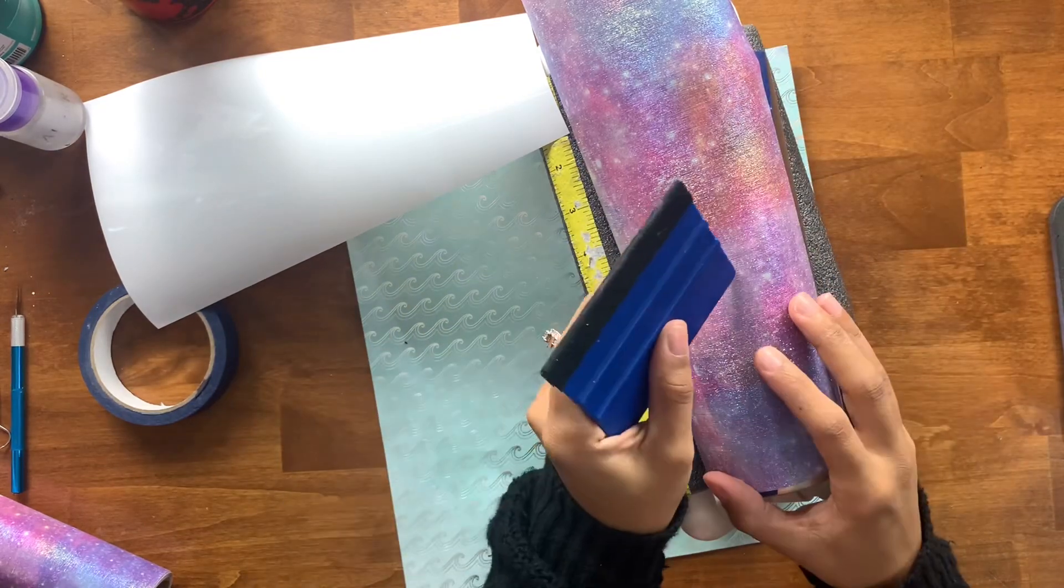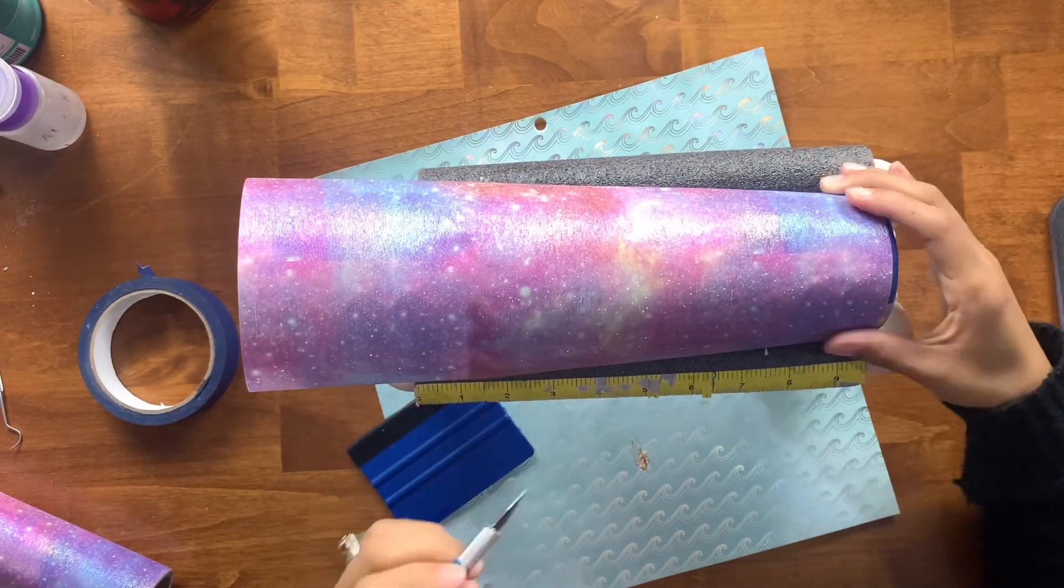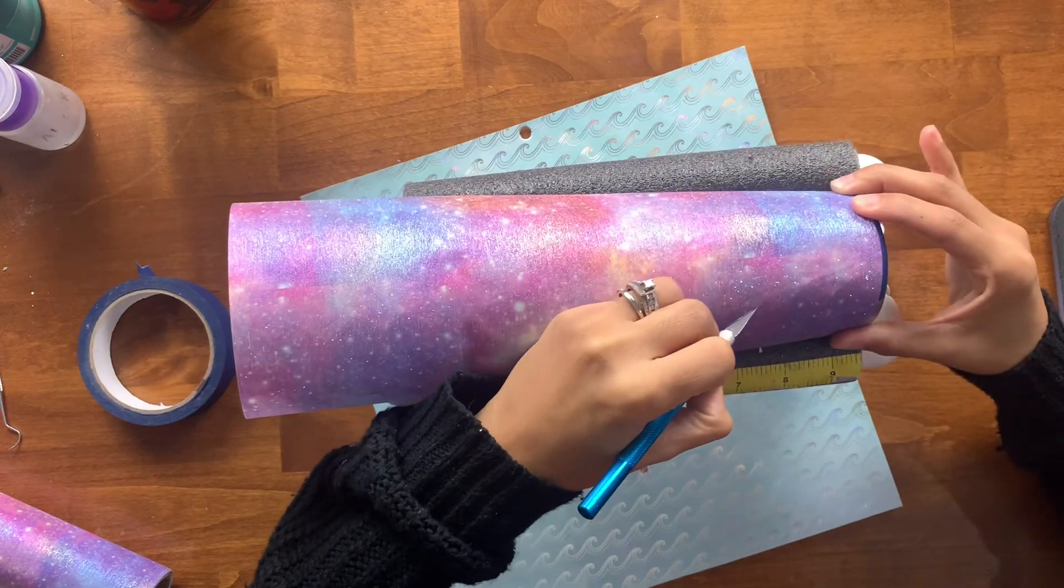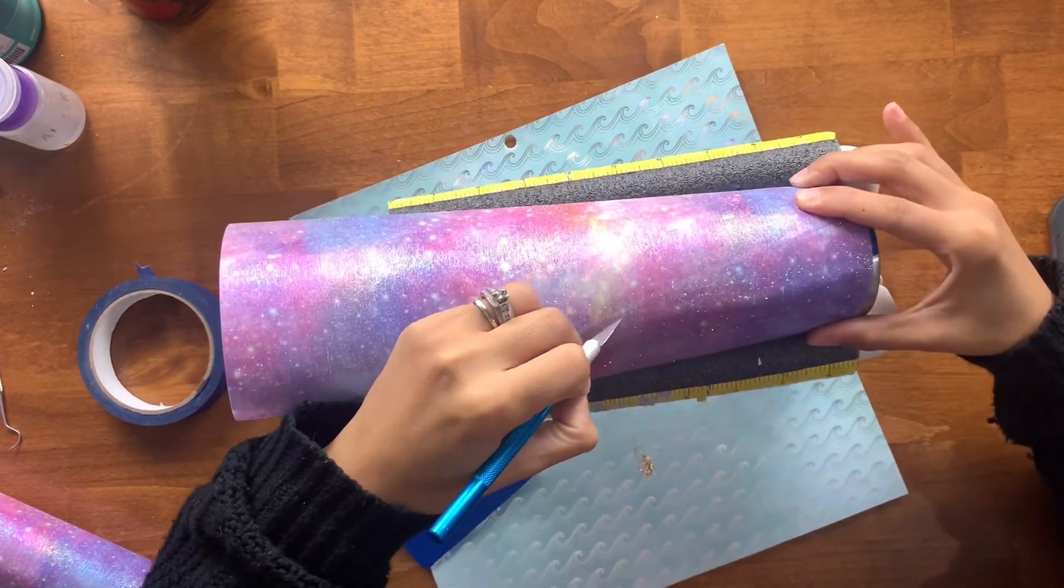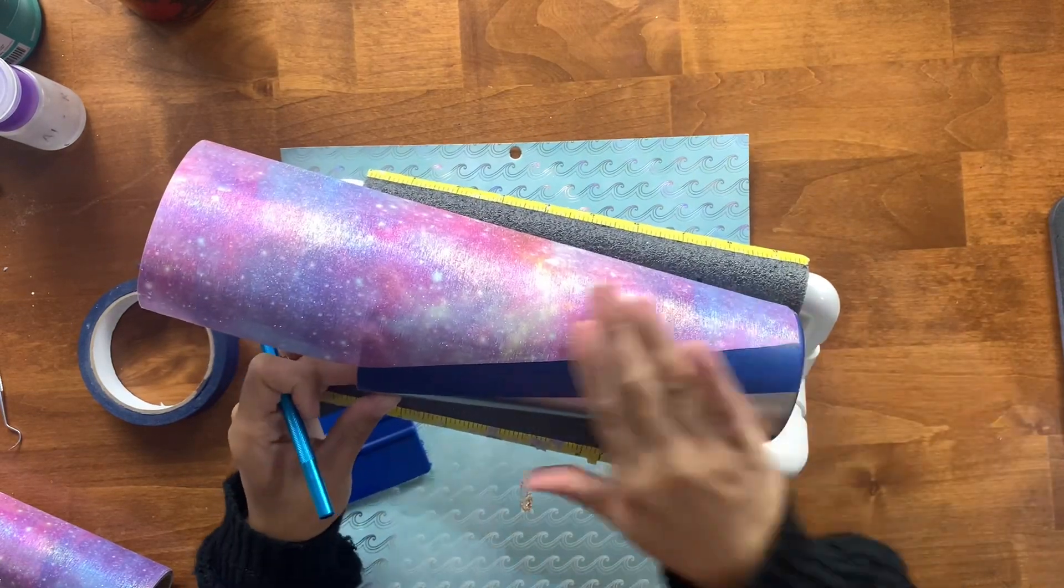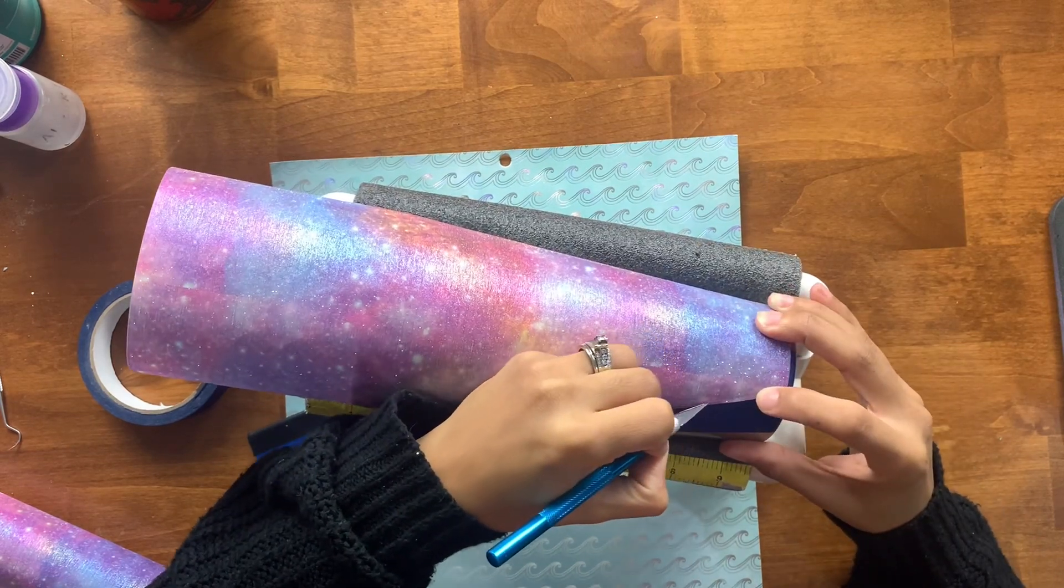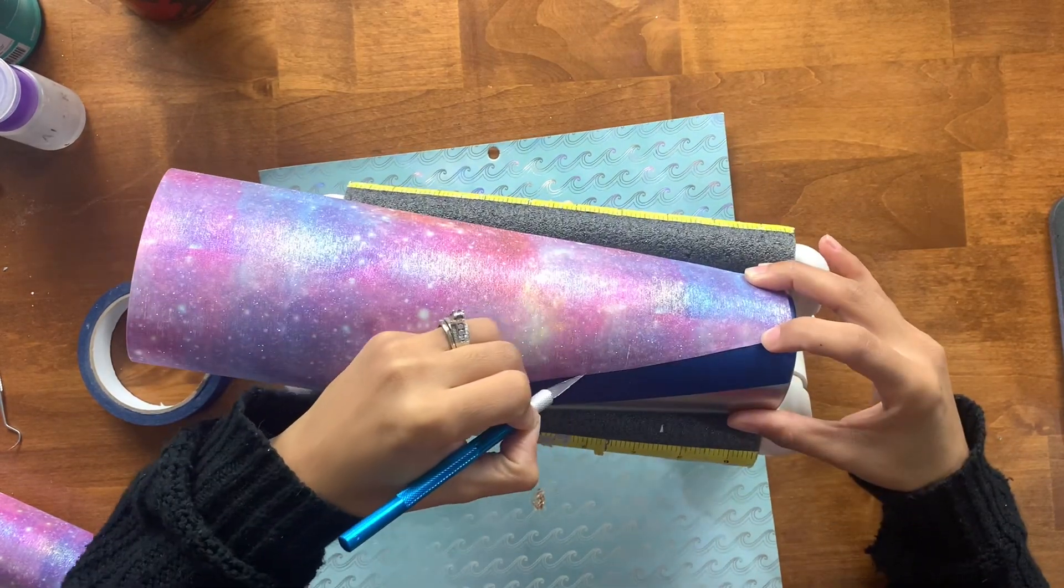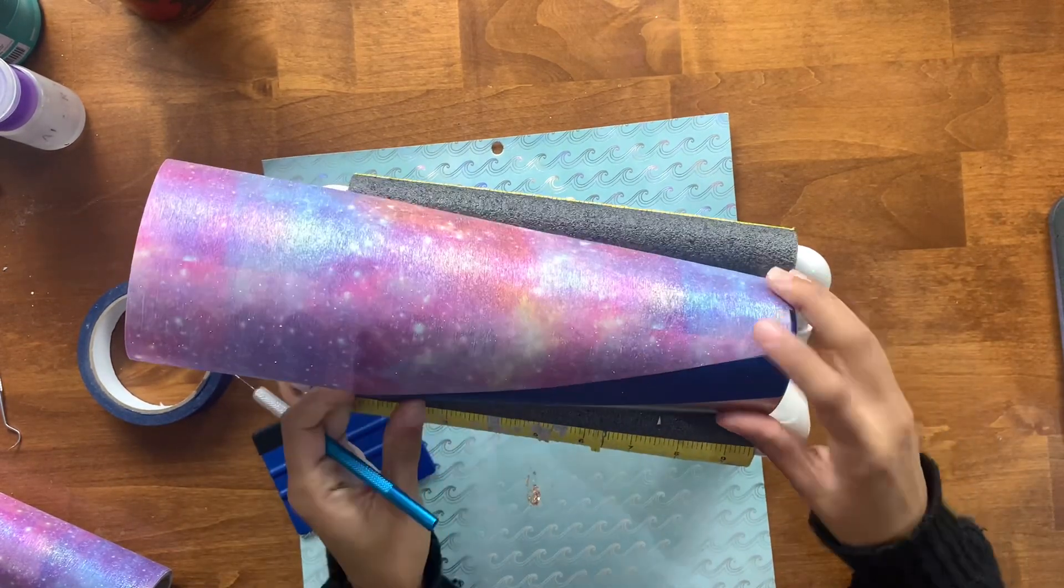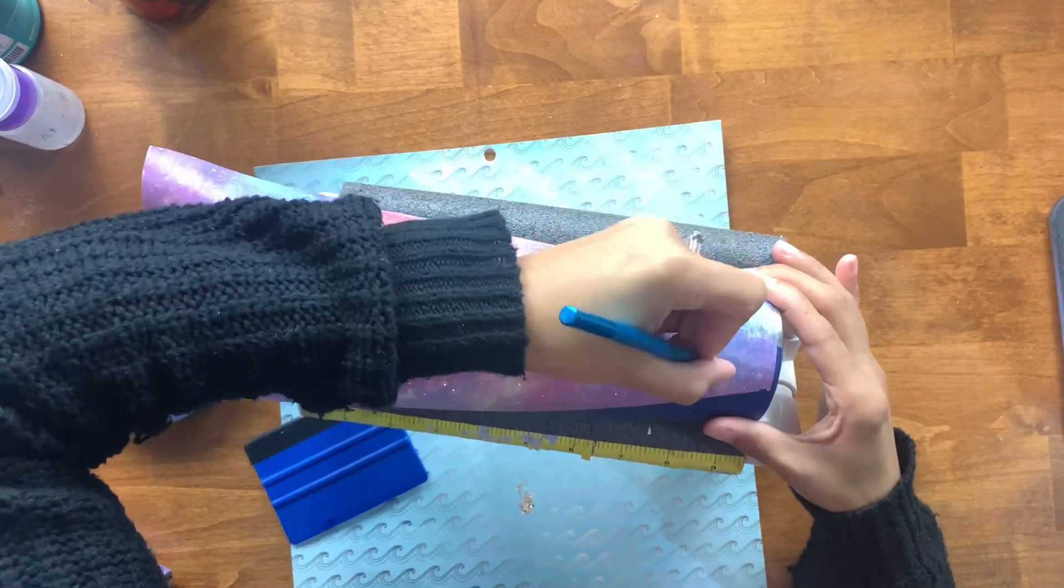This one was a little bit thicker than their regular solid color vinyls but very similar to the thickness of the glitter vinyl from tech wrap craft. Now I'm going to take my craft knife to remove all the excess by using my squeegee tool to help me find the tape line, then use my craft knife to very carefully cut along that tape line.